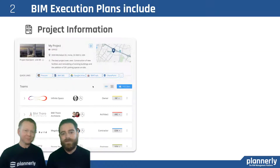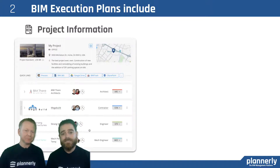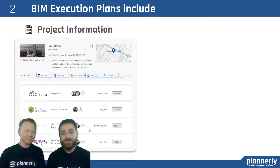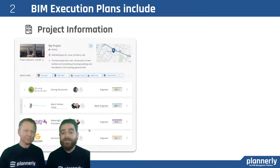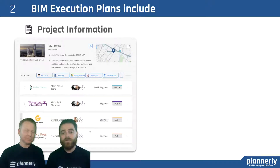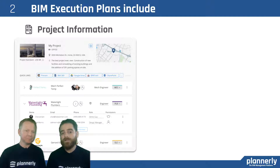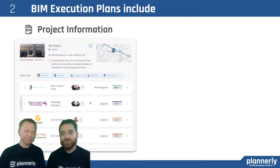A typical BIM execution plan would have anything from project information and the contact team list details, even links to other web applications or just sharing where all of the files or models are stored.